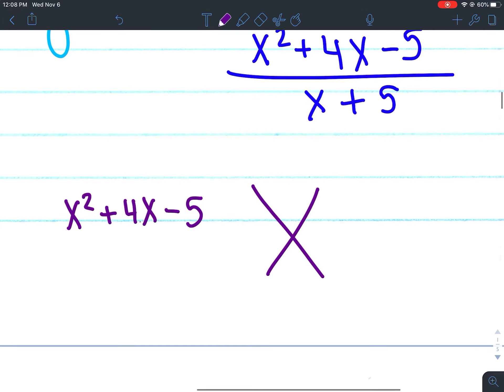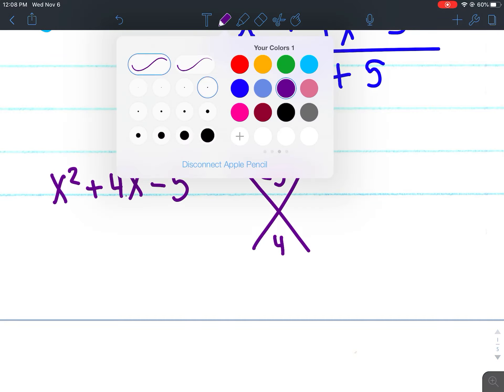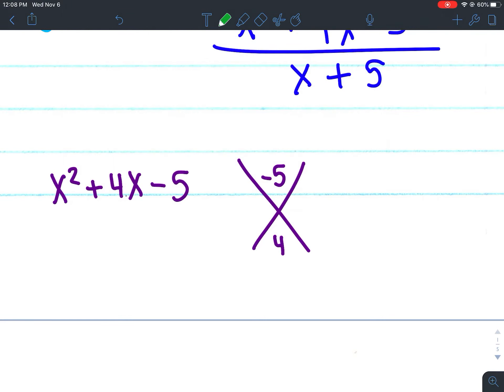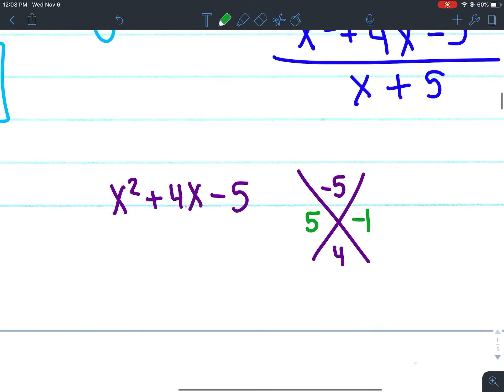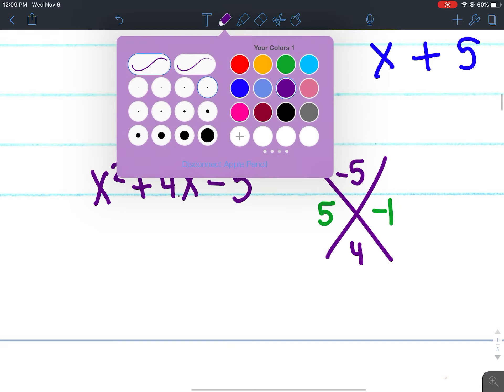So my A times C, so 1 times -5 would be -5. And then my B value is going to be 4 and that goes at the bottom. So I'm looking for factors of -5 that multiply to -5 but add to 4. So that's going to be positive 5 and -1, right?